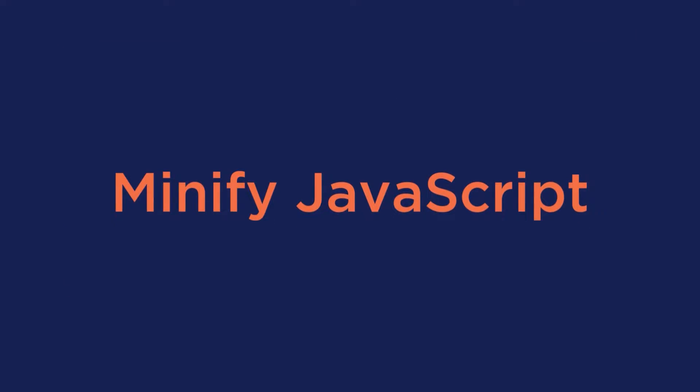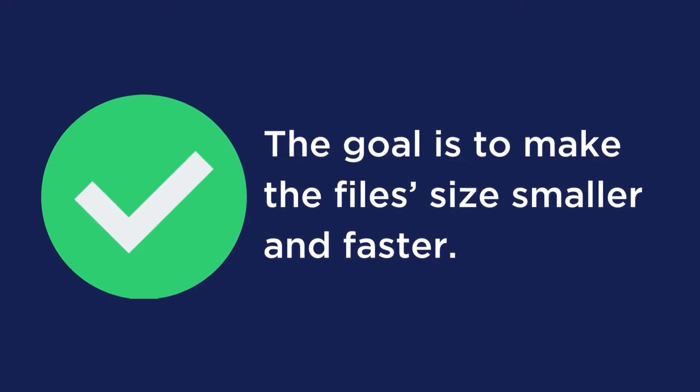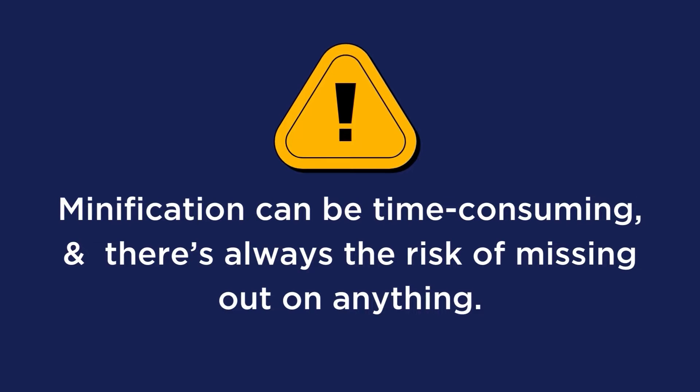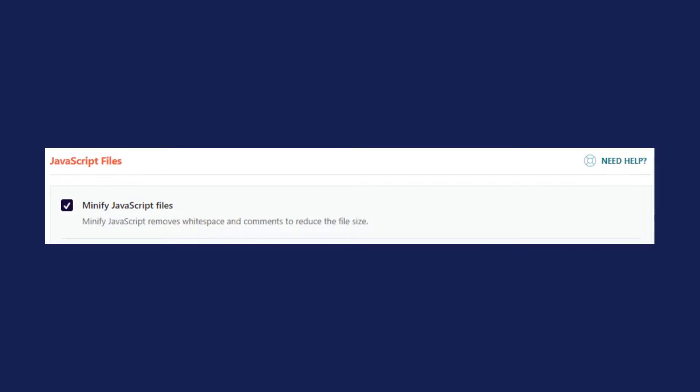Next is to minify JavaScript. By minifying JS files, you remove any comments, line breaks, and white spaces included in the code. The goal is to make the file sizes smaller and faster. Minification can be time consuming and there's always the risk of missing something, so it's always best to use a minification tool or WP Rocket. Our plugin is by far the easiest way to minify JS files in just a few clicks — all you have to do is enable the minify JavaScript file option in the file optimization tab.